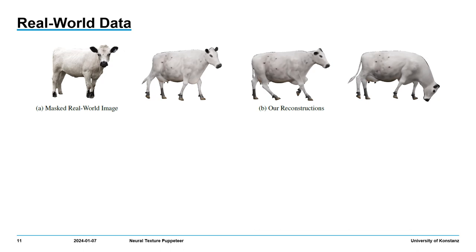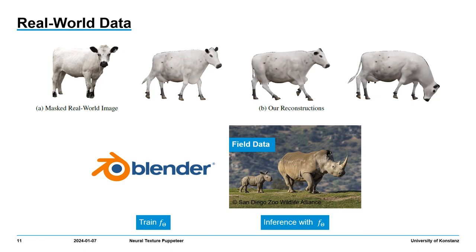The nice thing about our model is that we can perform a zero-shot synthetic to real-world domain shift, which we demonstrate with a real-world cow. This makes our model interesting for applications where data is limited and synthetic data can be generated using Blender.